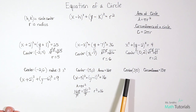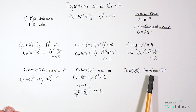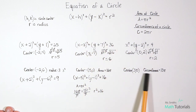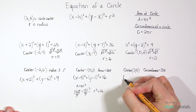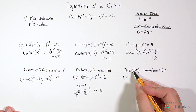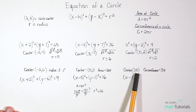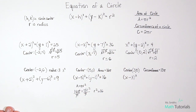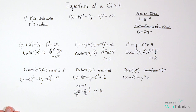For this last one, the center is (3, 0), so we can write the first part: (x - 3)² + y² = r². We write just y² — not y minus zero — since the k value is zero. We still need to find r² from the given circumference of 10π.